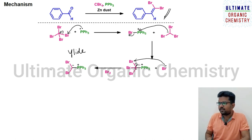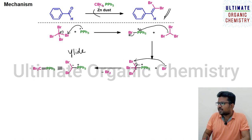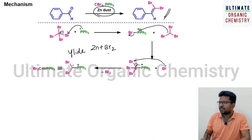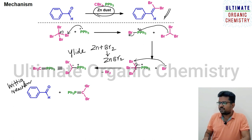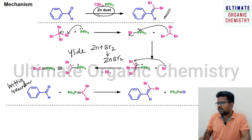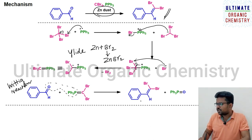The ylide can be represented with a double bond between carbon and phosphorus. Br₂ is leaving in this step, and zinc reacts with the remaining bromine to form zinc bromide. The phosphorus ylide then reacts with benzaldehyde in a Wittig reaction, forming a carbon-carbon double bond, with triphenylphosphine oxide as the byproduct. The oxygen and triphenylphosphorus part form a new double bond, giving the dibromo alkene intermediate.